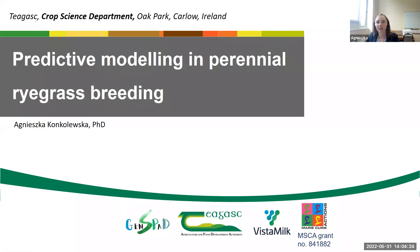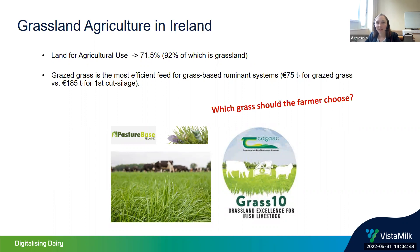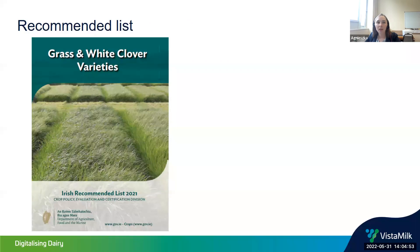Let's start with agriculture in Ireland. The land for agricultural use in Ireland is almost 72 percent, and 92 percent of that is grassland. Grazed grass is the most efficient feed for grass-based ruminant systems, but there is different types of grass, so which grass should the farmer choose? We have a recommended list of grass and white clover varieties that Irish farmers use to find the best varieties for their needs.